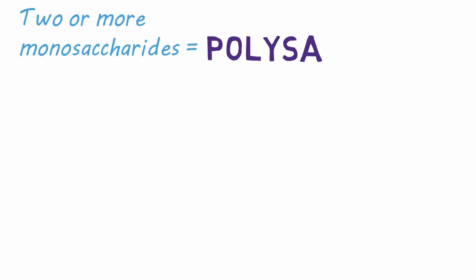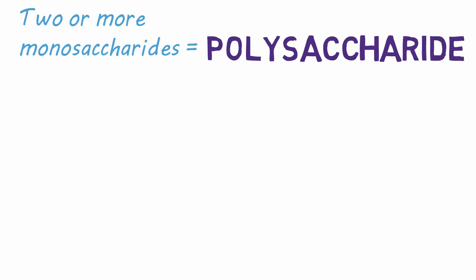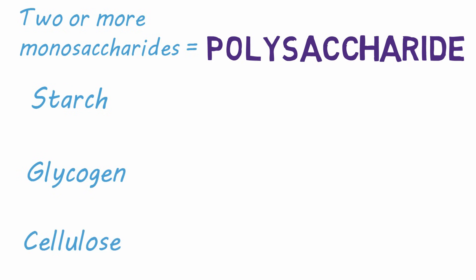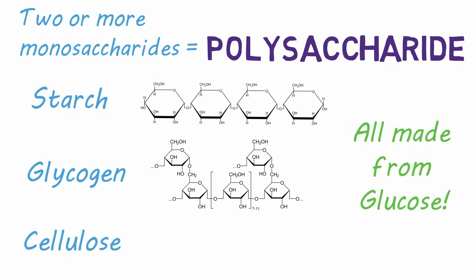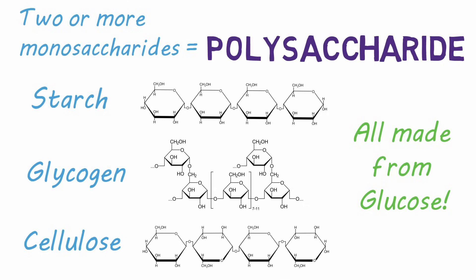When more than two monosaccharides are combined, a polysaccharide is formed. Starch, glycogen, and cellulose are all examples of polysaccharides, and they're all made of the same monomer: glucose. The way glucose is bound together determines whether the resulting saccharide is starch, glycogen, or cellulose.